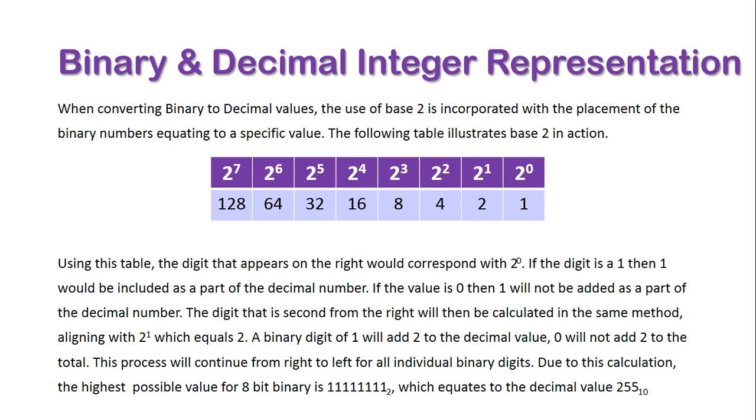On the far right, we have 2 to the power of 0 and that equals 1. Next to it, we have 2 to the power of 1, which equals 2. 2 to the power of 2, which equals 4. And so on this pattern goes. There are 8 slots here to represent the 8 bits, right up to 2 to the power of 7, which equals 128.